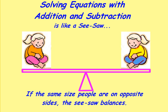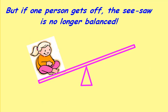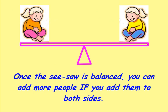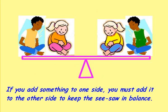Solving equations with addition and subtraction is like a seesaw. If the same size people are on opposite sides, the seesaw balances. But if one person gets off, the seesaw is no longer balanced. Once it's balanced, you can add more people if you add them to both sides.